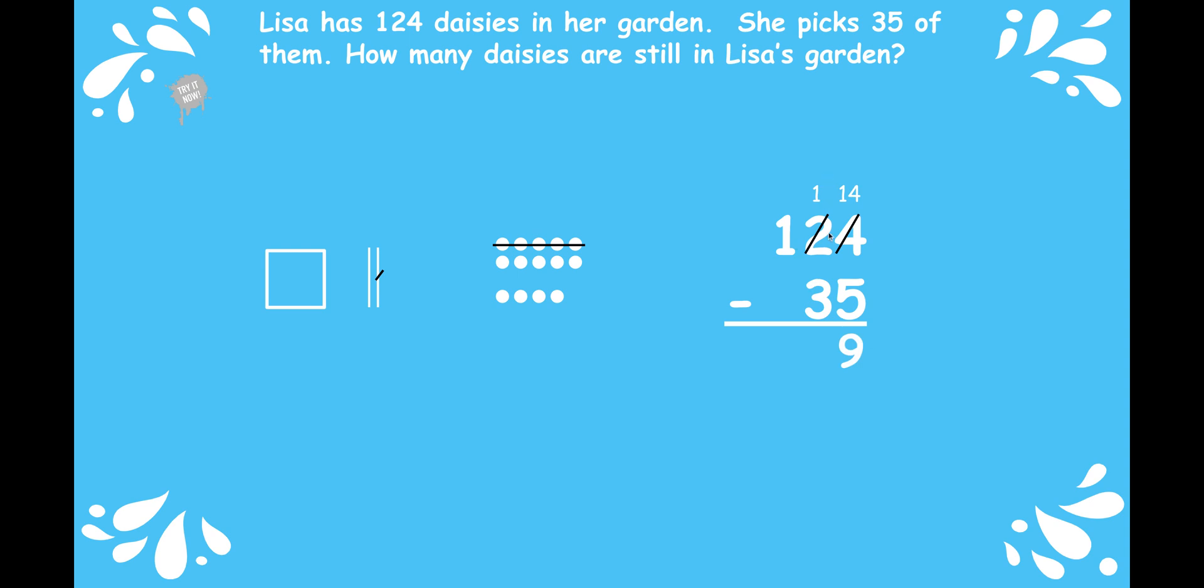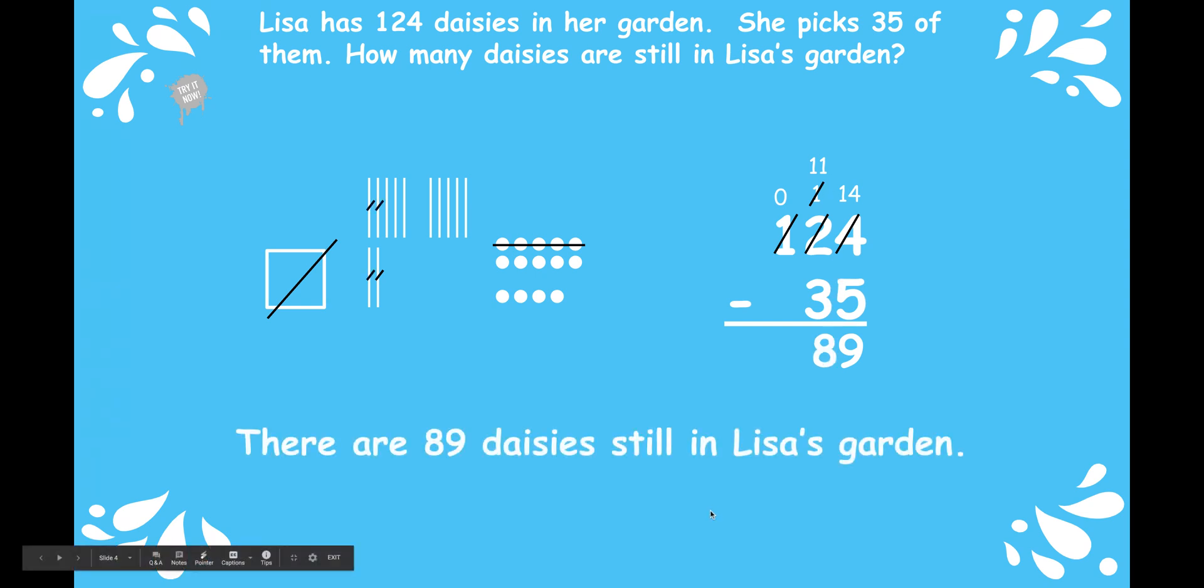Now I need to subtract my 10s. I have one 10 minus three 10s. Uh-oh. I have more on the floor. What do I do? I need to go to the 100s. I need to go next door, take 100. That's going to give me, I took my 100. It's going to give me 10 tens plus the 1 ten. So it's going to leave me with 0 hundreds. And now give me 10 tens plus the 1 ten for 11. 11 minus 3 is 8 tens. There are 89 daisies still in Lisa's garden.